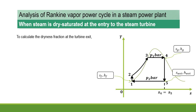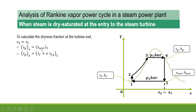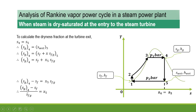First, we calculate the dryness fraction at the exit of the turbine, X5, since 4 to 5 is isentropic expansion and point 5 is at the turbine exit. The condition is: Sg4 = S-wet5. For wet steam, the formula is Sf + X·Sfg, so: Sg4 = Sf + X5·Sfg. Rearranging: X5 = (Sg4 − Sf) / Sfg. This gives the dryness fraction at the turbine exit.